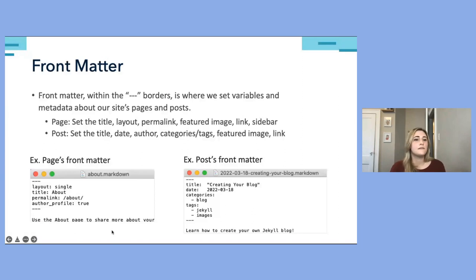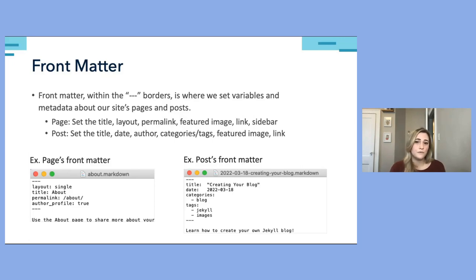The front matter of our posts and pages is where we set the variables and metadata — things like the title, layout, link, featured images, etc. For posts, we can also assign categories or tags within the front matter.